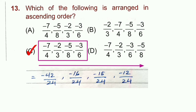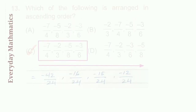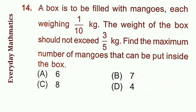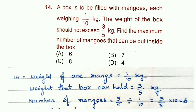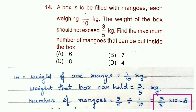Question 14 (Everyday Mathematics): A box is to be filled with mangoes each weighing 1/10 kg. The box should not exceed 3/5 kg. Find the maximum number of mangoes. Number of mangoes = total weight ÷ weight per mango = (3/5) ÷ (1/10) = 3/5 × 10 = 6. Maximum 6 mangoes can be put in the box. Option A is correct.